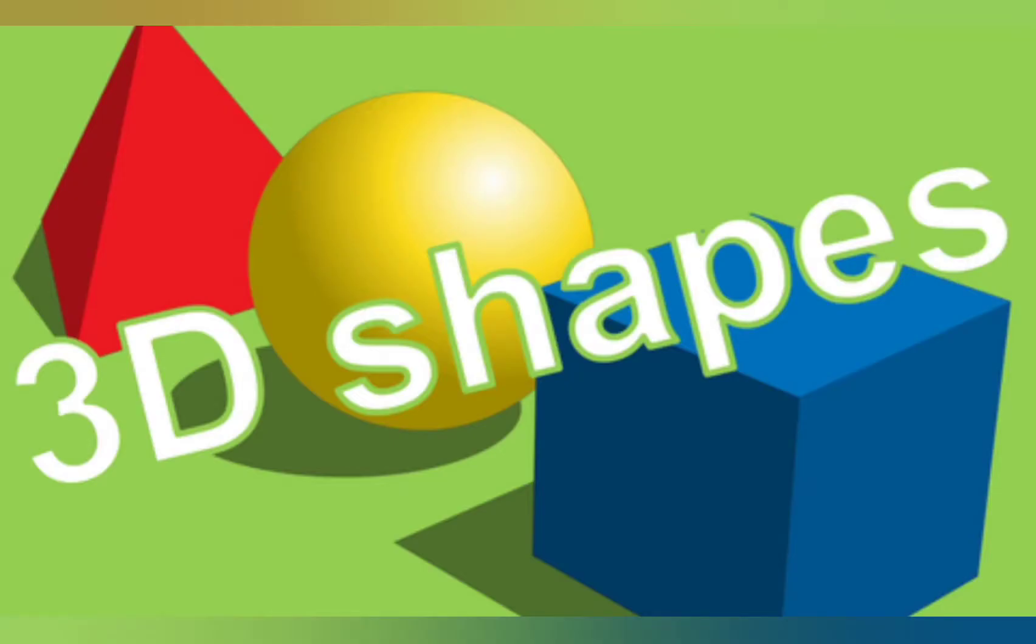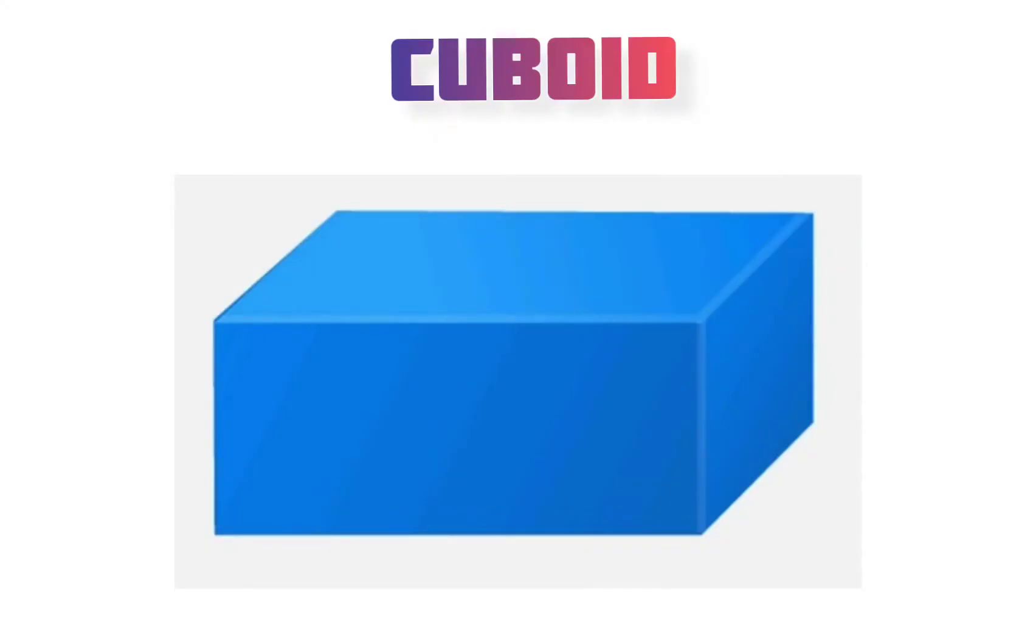Next we are going to learn another 3D shape. This is a cuboid. It is the 3D shape of a rectangle.